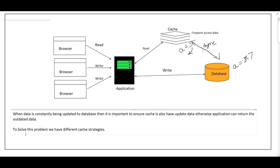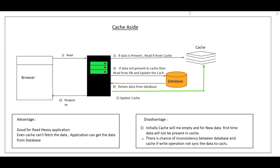To solve this problem we have different types of caching strategies. The first is Cache Aside. When the browser sends a read request, it will first check if the data is present in the cache or not. If the data is not present in the cache, the application will read the data from the database, update that data into the cache, and then return the response. If the second time the data is present in the cache, it will directly return the data from the cache.